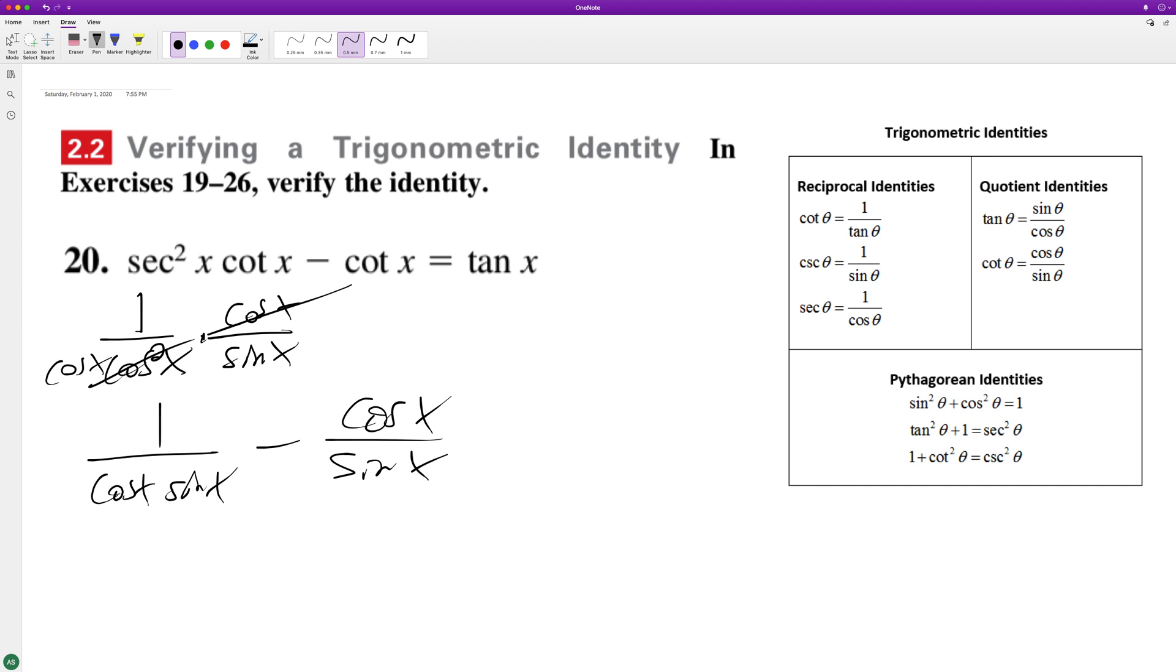If we get a common denominator, we get one minus cosine squared x over cosine x sine x. The reason is because when we put a cosine x on the bottom here, this becomes cosine squared x.